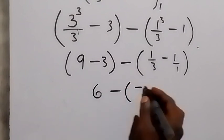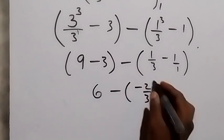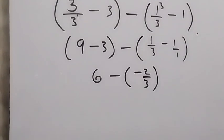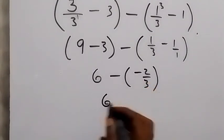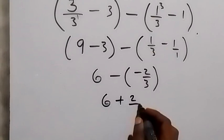Then minus times minus 2 over 3. You have this minus multiply, then you have 6 plus 2 over 3.